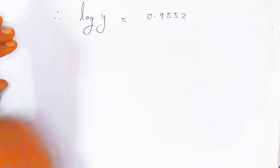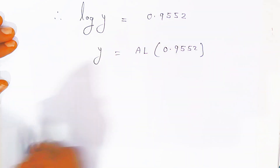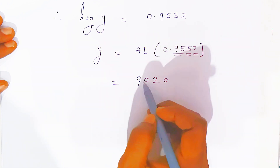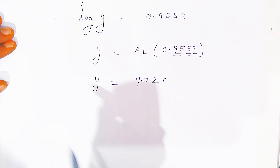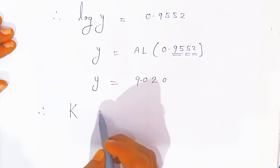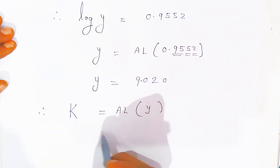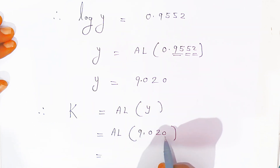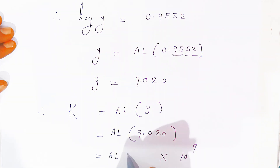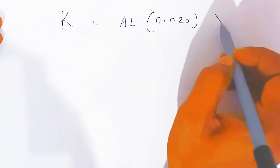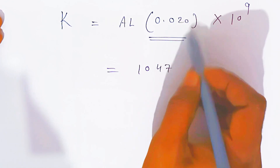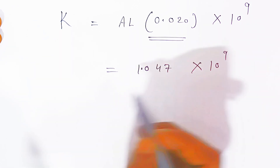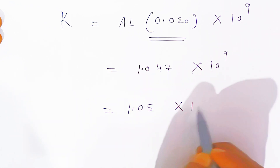So log K equals 0.9552, and y equals antilog of 0.9552. In the antilog table, row 95, column 5 with mean difference 2 gives 9020, with characteristic 0, so y equals 9.020. Therefore log K equals 9.020, which means K equals antilog of 9.020 equals 1.047 times 10 to the power 9. Rounding, K approximately equals 1.05 times 10 to the power 9.